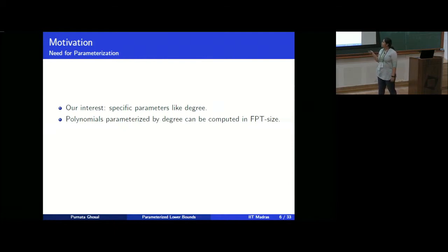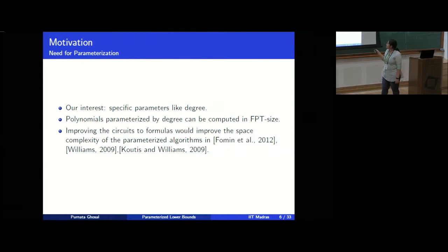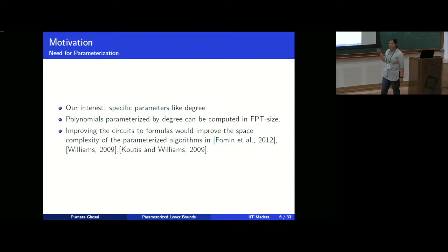The main reason is that these polynomials are very easy to compute — they are all computable by FPT-size circuits. So if we can come up with formulas computing these polynomials that are parameterized by degree, that will improve the space complexity of these algorithms. This was the work on subgraph isomorphism, where the problem was reduced to detecting a multilinear monomial in the homomorphism polynomial, and similarly for the k-length path problem.